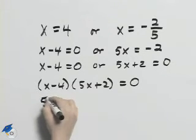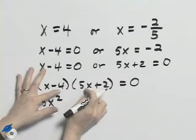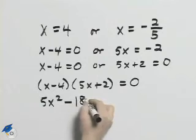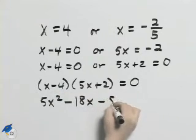x times 5x is 5x squared plus 2x minus 20x is minus 18x. And then negative 4 times 2 is minus 8.